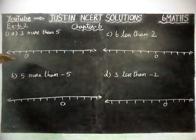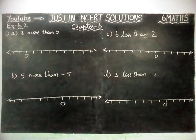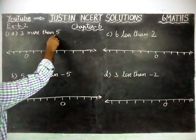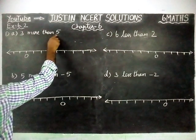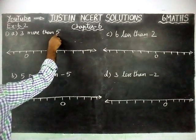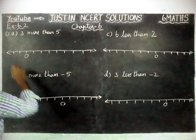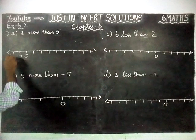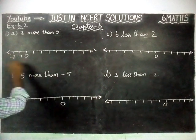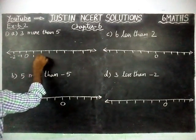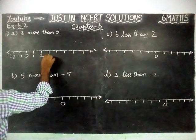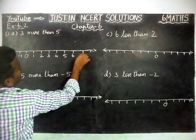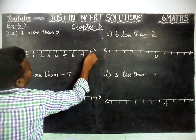Now we are going to draw a number line first. For part (a), 3 more than 5 — we have to move from 5. From 0, left hand side: minus 1, minus 2; right hand side positive numbers: 1, 2, 3, 4, 5, 6, 7, and 8.